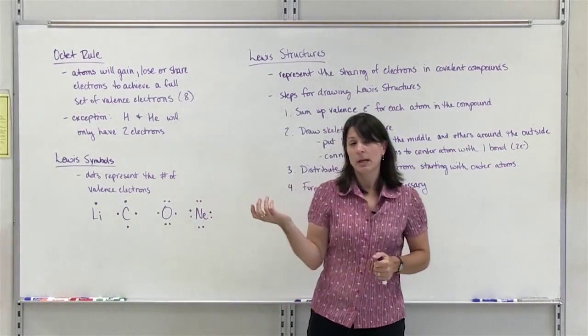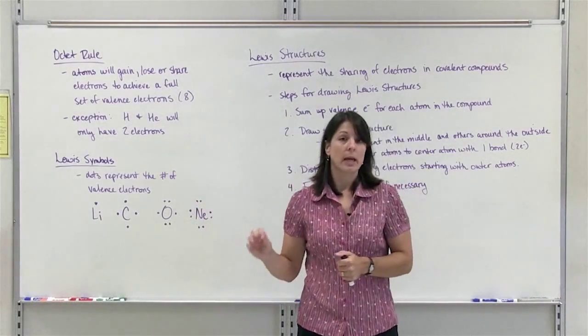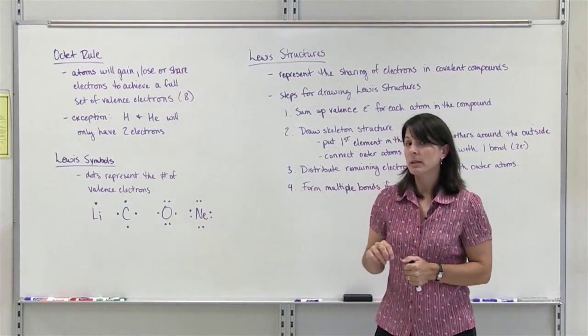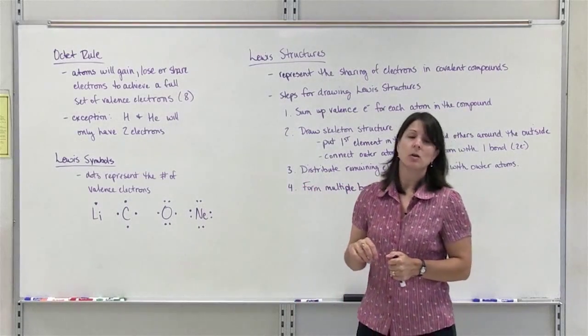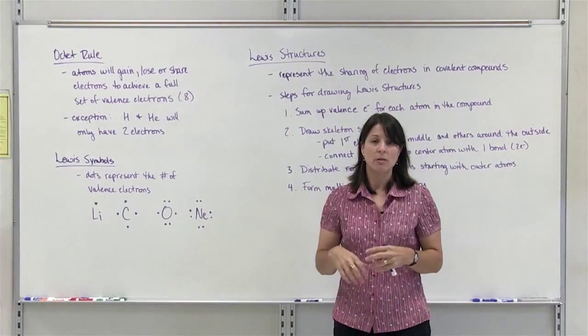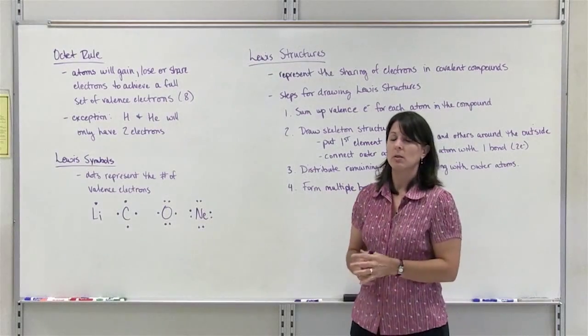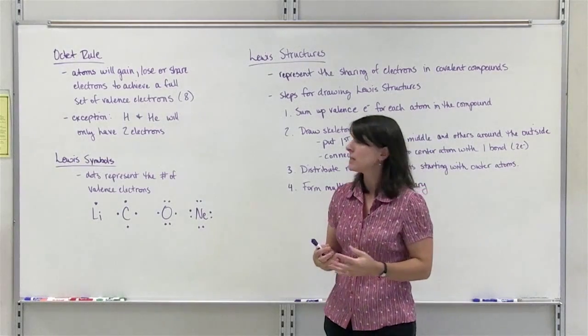Atoms on the periodic table will gain, lose, or share valence electrons so that they achieve a full set of valence electrons, which is 8.